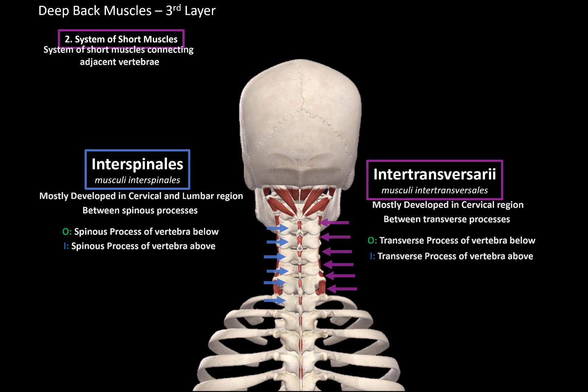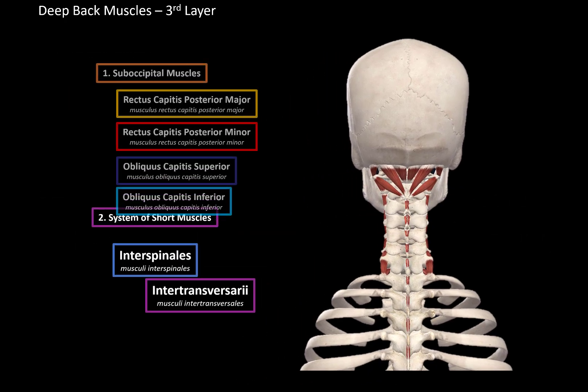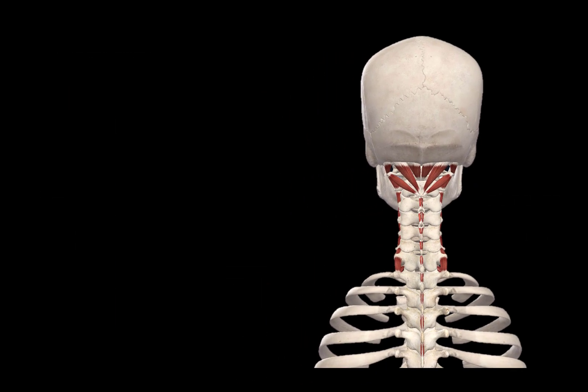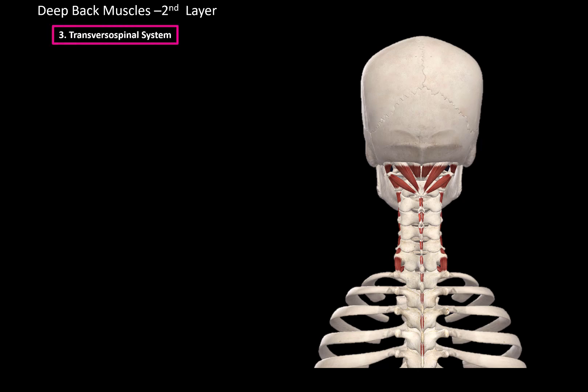So that was the third layer of the deep back muscles. Now let's do the second layer — the transversospinal system. The transversospinal system are a system of muscle fibers that go from the transverse process of the lower vertebrae to the spinous process of the upper vertebrae, which makes sense when you look at the name.